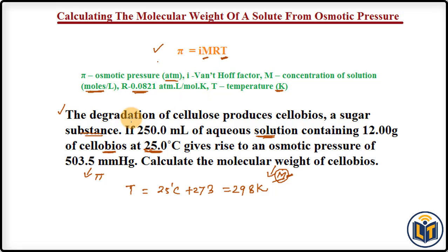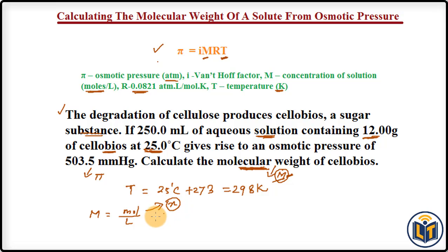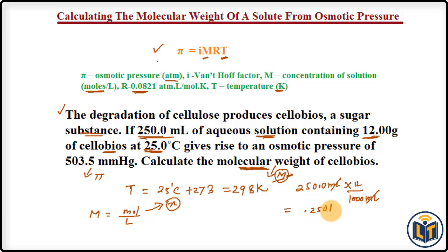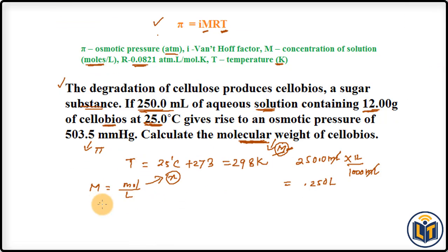Next, we find the concentration of the solution. Since we need to find the molecular weight, we cannot directly find the moles of solute — we don't know the molecular weight yet. So we assume moles of solute = X. The volume is 250.0 mL, which converts to 0.250 liters. Therefore, molarity M = X / 0.250 L.